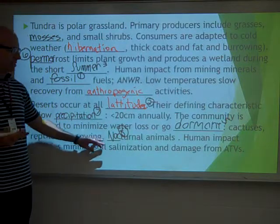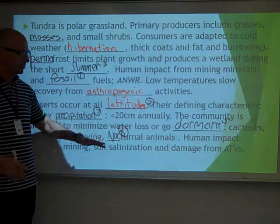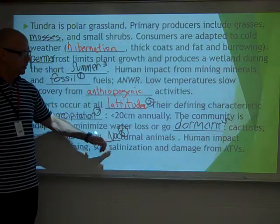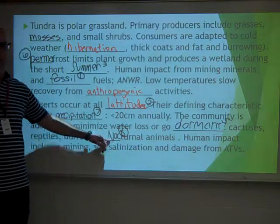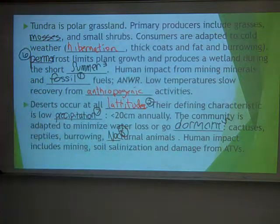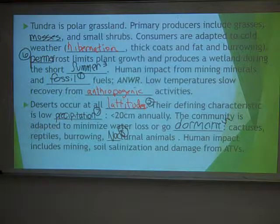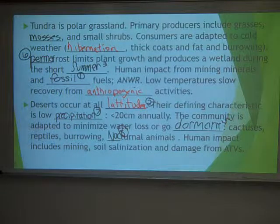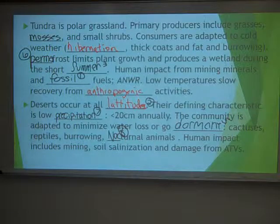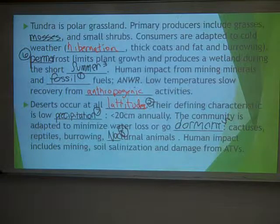Cacti have spines instead of leaves because leaves are where water is lost. Nocturnal animals escape the desert heat that way. It actually gets pretty cold in the desert at night — usually down to the 30s or 40s, even in a hot desert, because there's no water to hold the heat in.